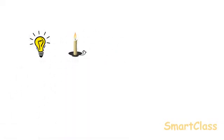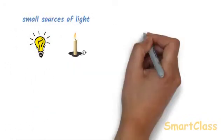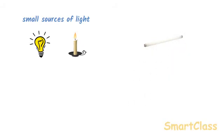Sometimes the shadows of opaque objects are not seen clearly. An electric bulb and a candle form sharp shadows because they are comparatively small sources of light. A fluorescent tube light, however, does not form sharp shadows because it is quite a large source of light. Since a fluorescent tube light is very long, some of the light from it always reaches behind the opaque objects, leading to the formation of very faint shadows. In fact, the shadows formed by fluorescent tube lights are so faint that it is usually very difficult to see them.